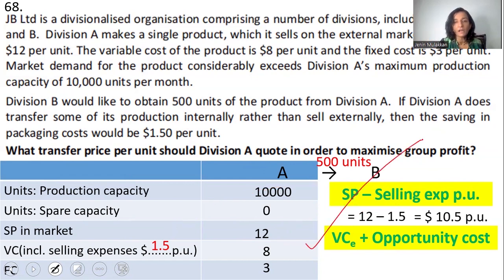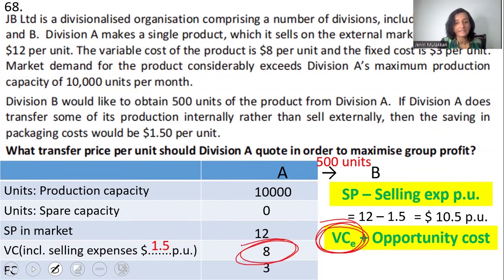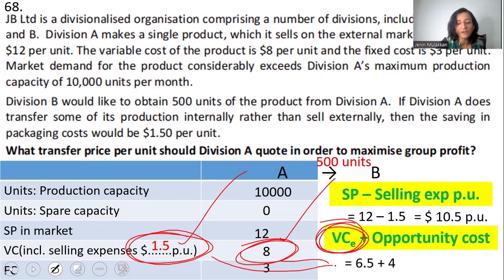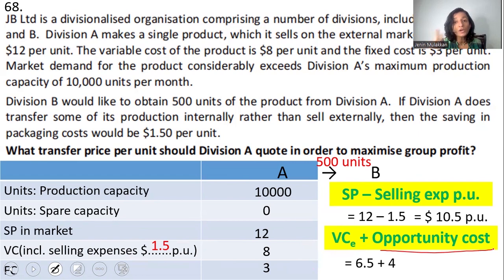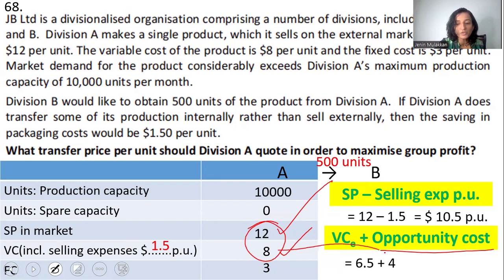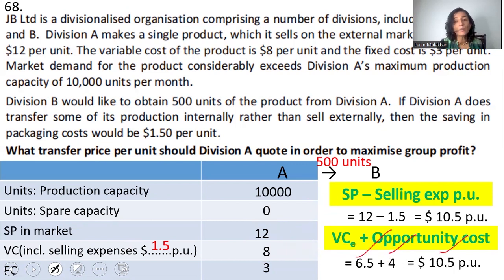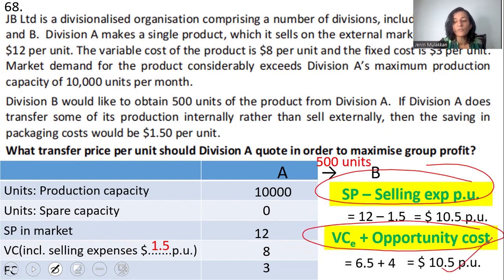Question 69: Parent Company has divisions A and B. Division A has limited skilled labor and is operating at full capacity making product Y. It has been asked to supply a different product X to division B, which currently sources product X externally for $1,700 per unit. The same grade of materials and labor is used in both products. Since A is at full capacity making Y, it must sacrifice Y production to make X. We must use the VCE + opportunity cost formula because two different products are involved.